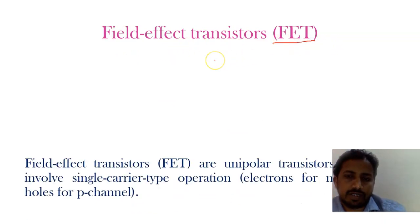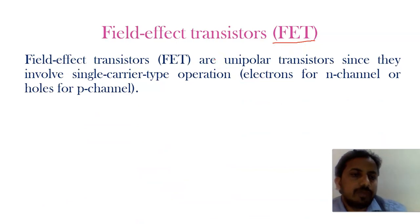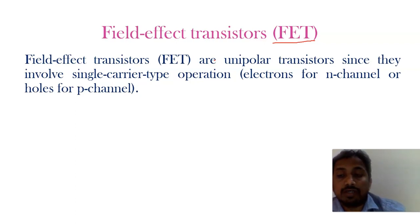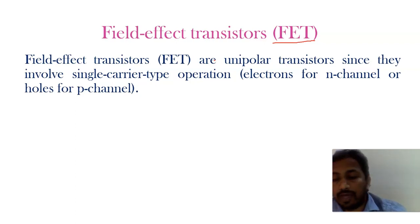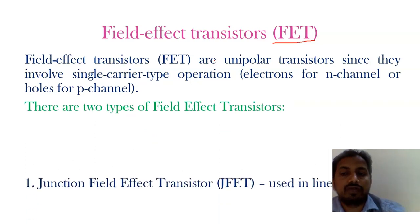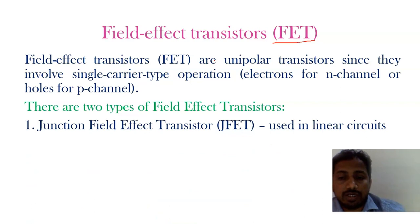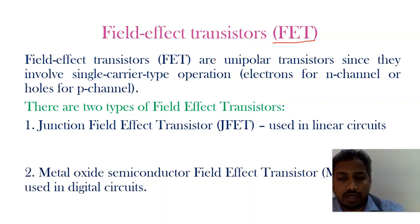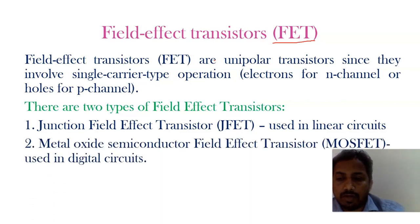Field effect transistors are unipolar transistors because only a single type of carrier is present — either N-type or P-type. When the carrier is N-type, we call it an N-channel; when it is P-type, we call it a P-channel. FETs are of two types: junction field effect transistors (JFET), used in linear circuits, and metal oxide semiconductor field effect transistors (MOSFET).